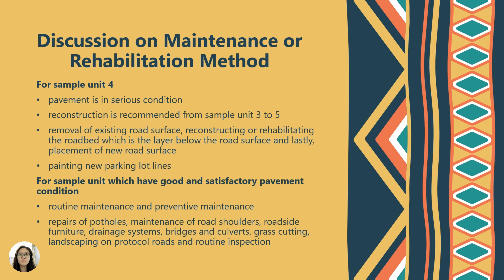I'm Seraphine Mui Chau'en, metric number AF210118, and I'll be discussing the maintenance and rehabilitation methods for the different sample units. Roads are a necessary aspect of modern life; if well maintained, they improve safety for road users, while a lack of maintenance will cause a rise in road accidents and diminished transport accessibility. For sample unit 4, the pavement is in serious condition where reconstruction is recommended from sample units 3 to 5. Reconstruction consists of removal of the existing road surface, reconstructing and rehabilitating the road bed, and placement of new road surface. The problem of disorderly car parking at the roadside can also be solved by painting new parking lines.